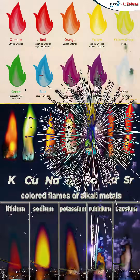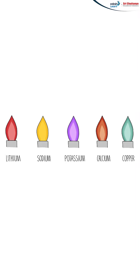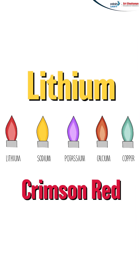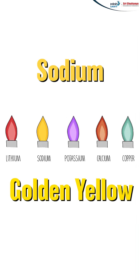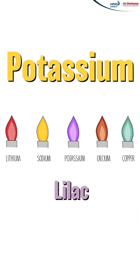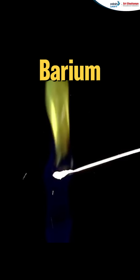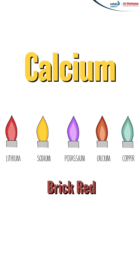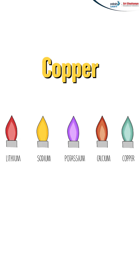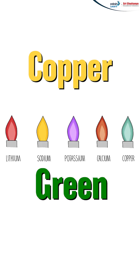Lithium gives a crimson red color, sodium gives golden yellow, potassium gives lilac, barium gives apple green, calcium gives brick red, and copper gives green. These various color combinations are what make firecrackers so colorful.